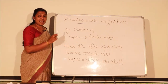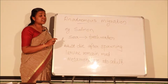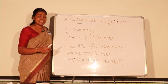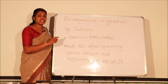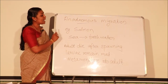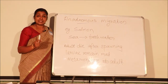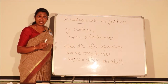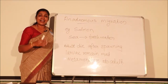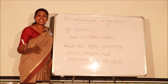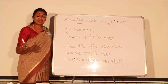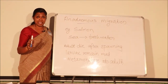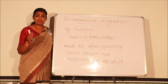Anadromous migration — the example is salmon. In anadromous migration, fishes migrate from sea to freshwater. The fish lives in the sea, and for the purpose of breeding and spawning they migrate from sea to freshwater. The salmon travels thousands of kilometers from the sea and reaches the river.